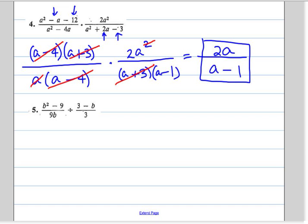Now in the next one we're doing a division, so we're going to keep the first fraction, that's B squared minus 9 over 9B. We're going to multiply by the reciprocal of the second fraction.